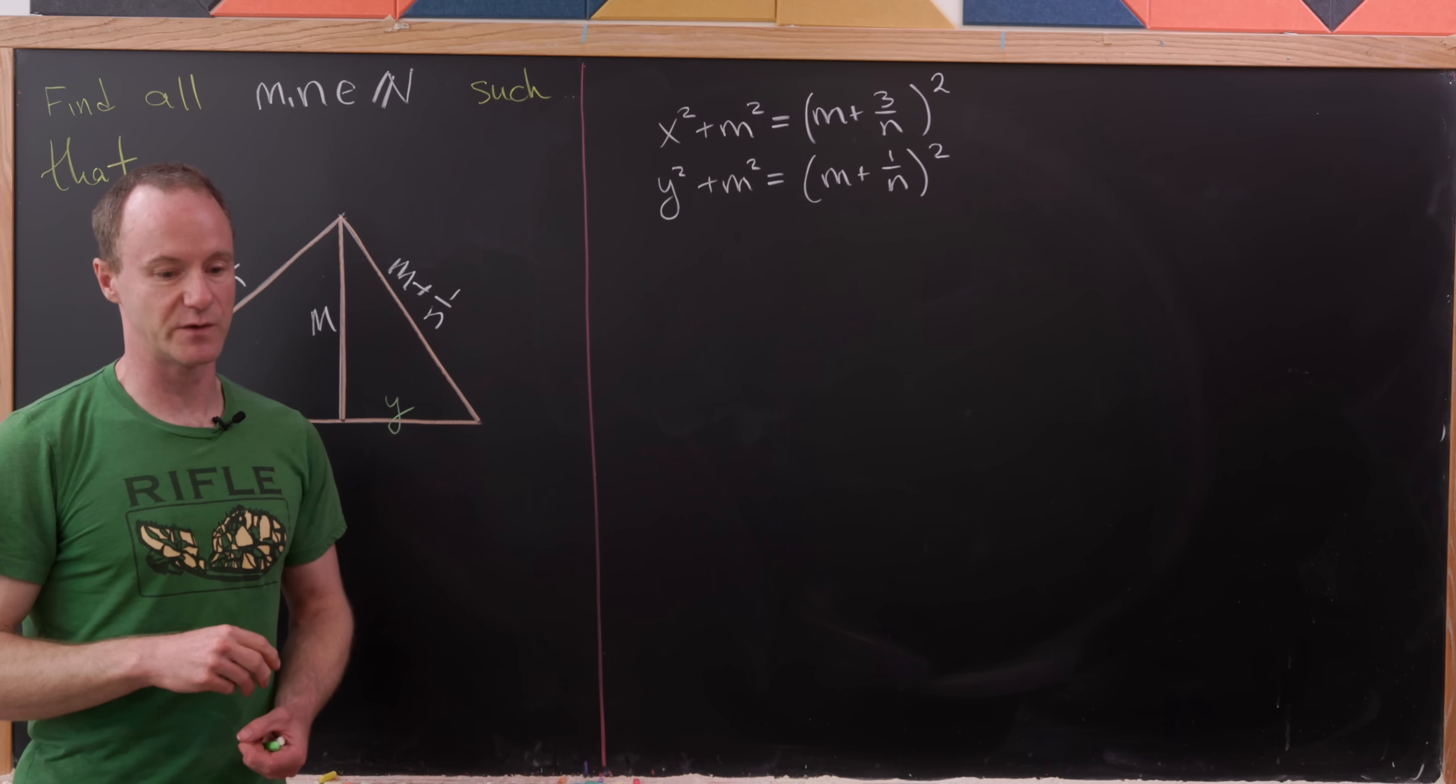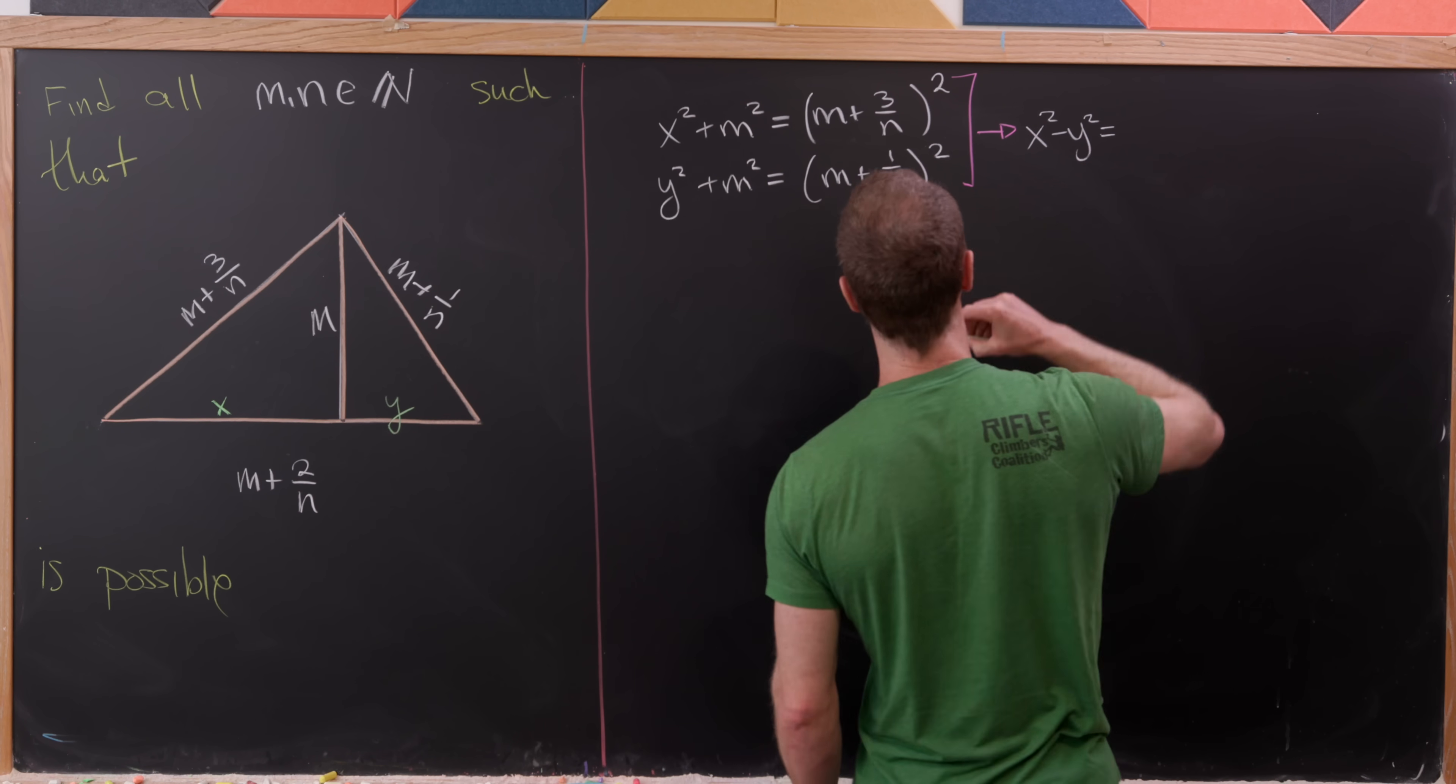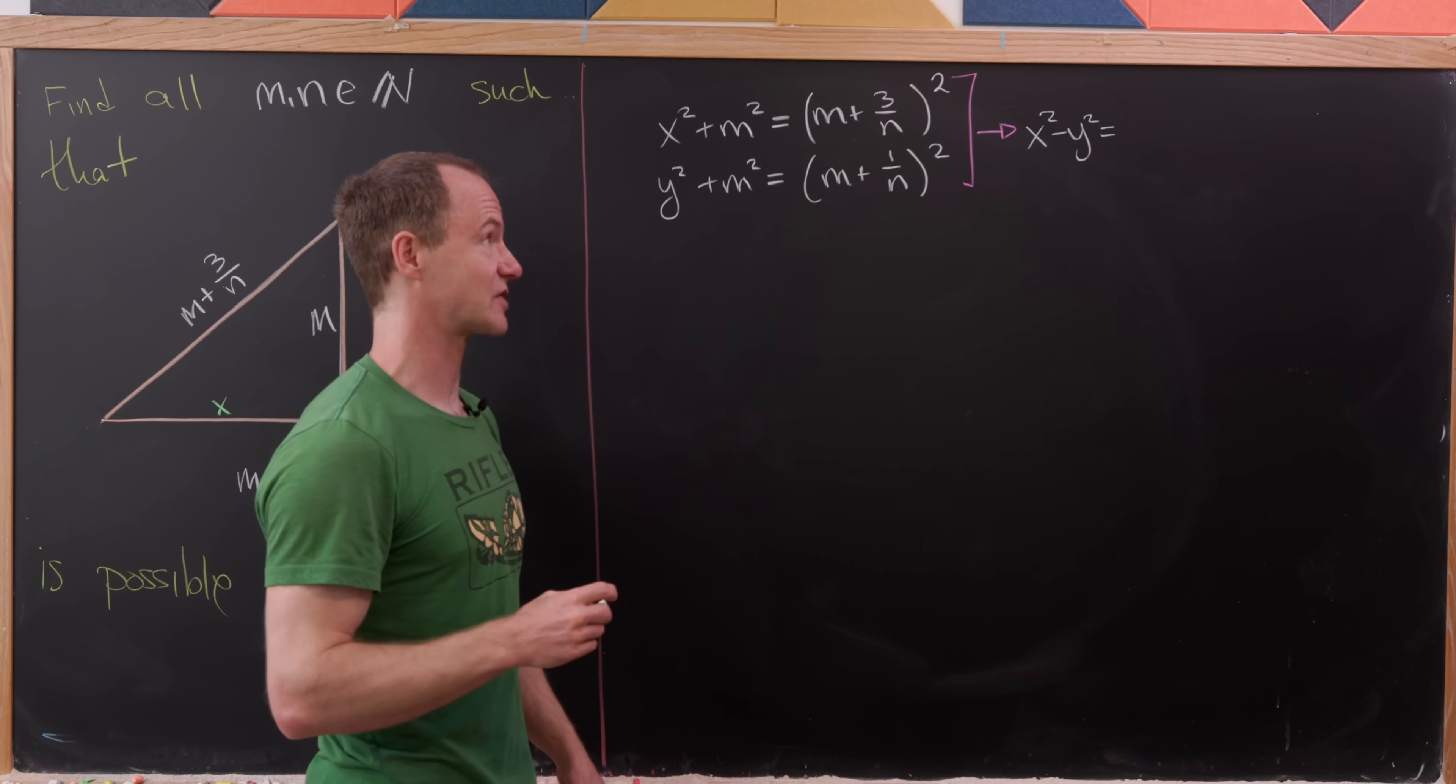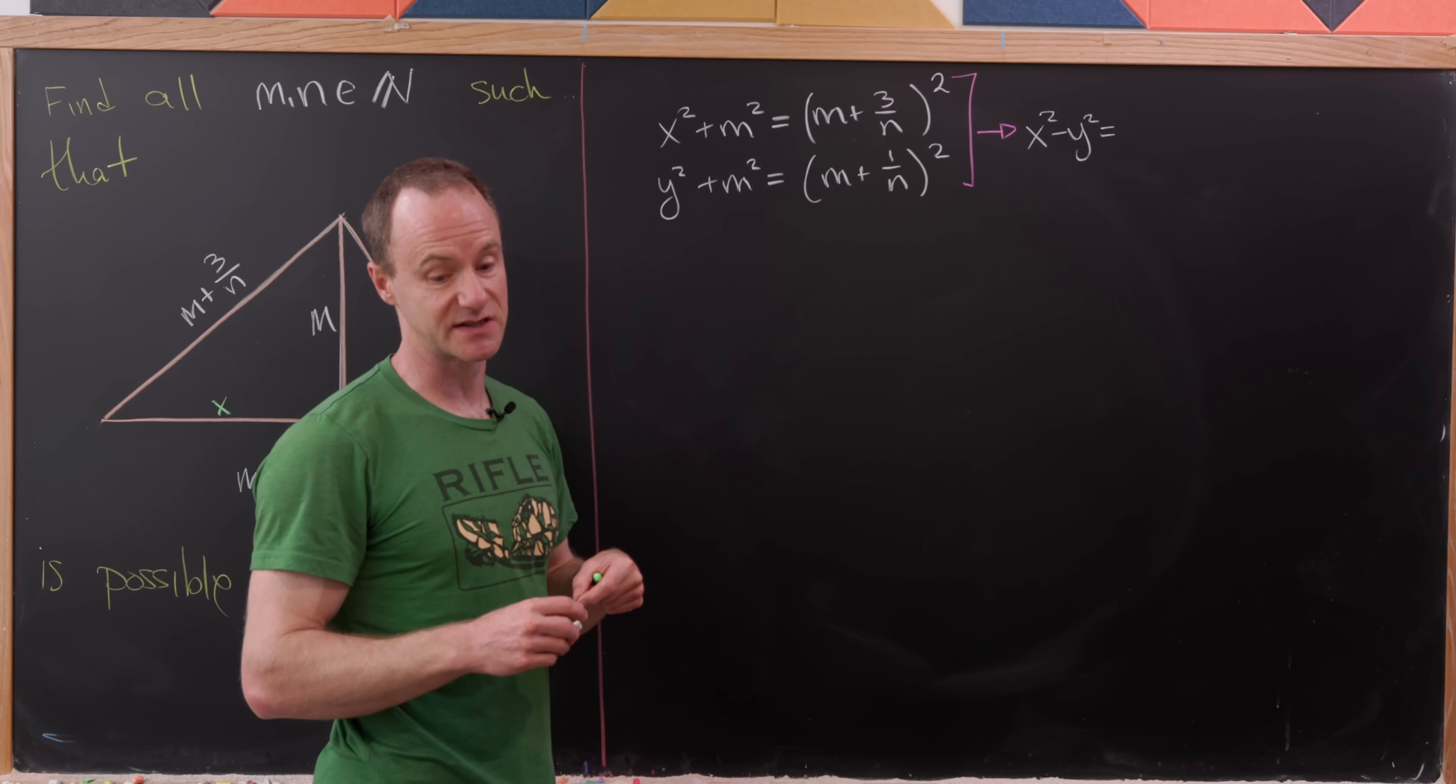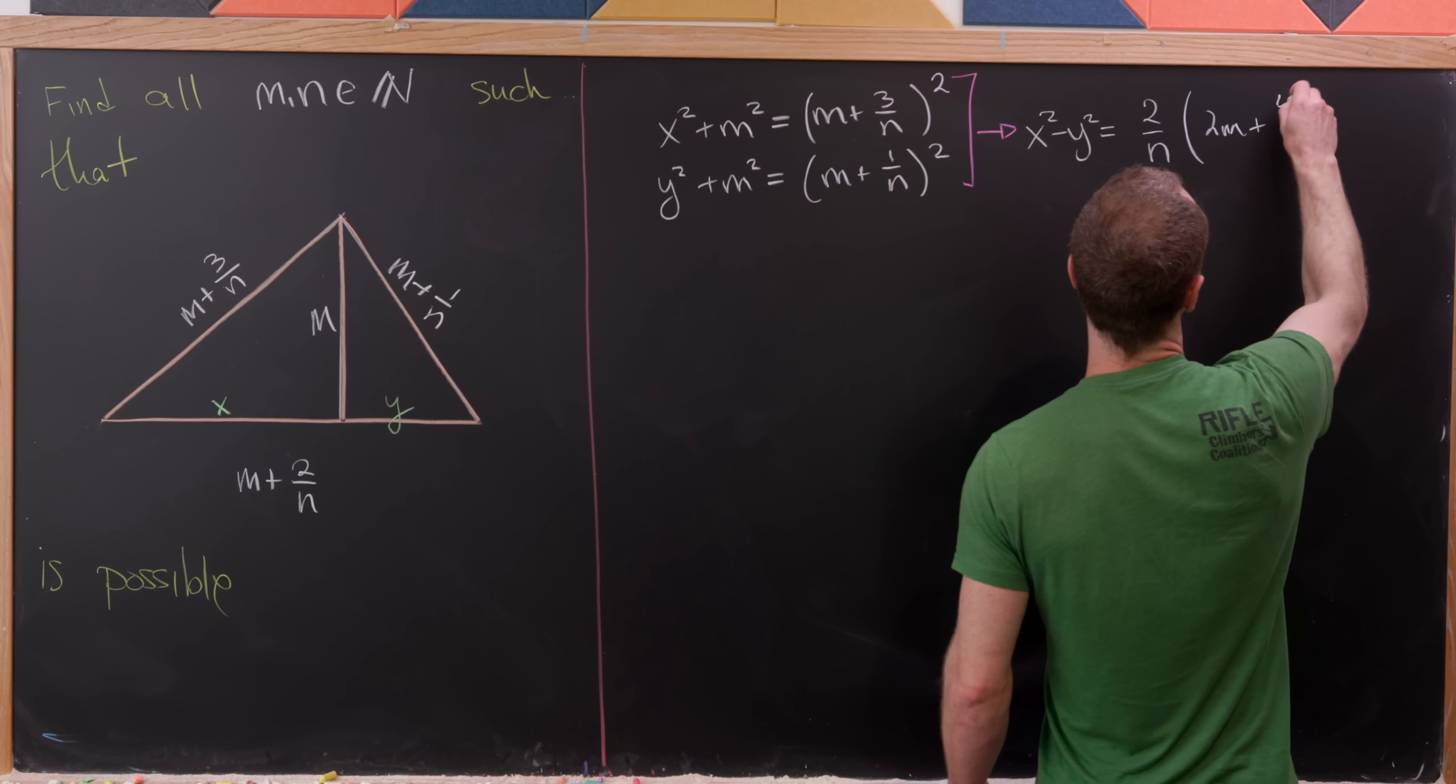Looking at each of these, let's observe that if we take the difference of these two equations, the m's will cancel. So let's maybe go ahead and do that. Let's take this difference. So that's going to give us x squared minus y squared equals, and now instead of taking just the straight difference of this, I'm going to recognize that as a difference of squares, and I'm going to do the factorization. So notice that the factorization will give us the difference of these two as well as the sum of these two. Well, it's the product of those two things. So the difference of these two will be simply 2 over n, and then the sum of these two will be 2m plus 4 over n.